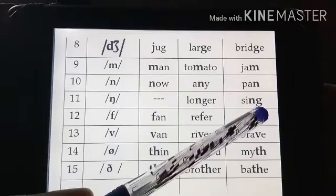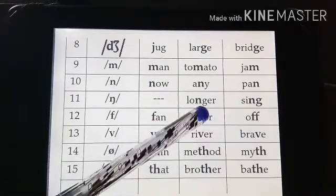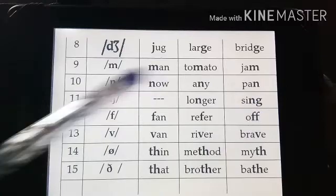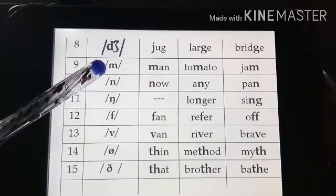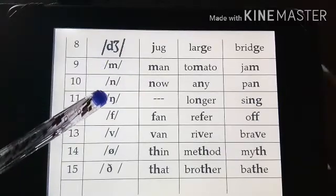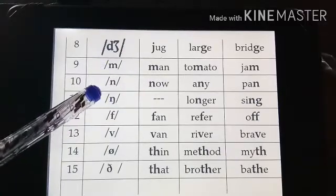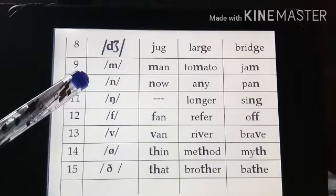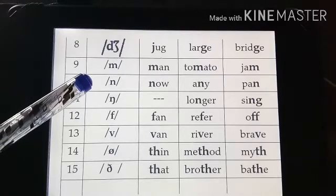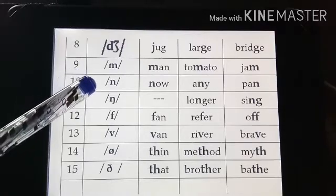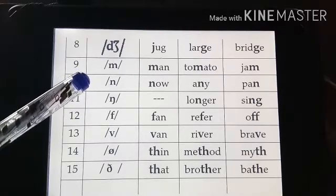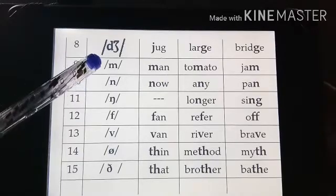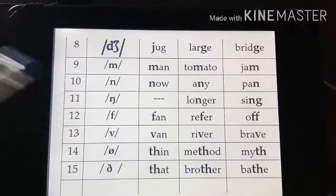In 'sing', the bold letters produce the /ŋ/ sound. /m/, /n/, and /ŋ/ — these three are called nasal sounds. Even though we close our mouth, they can be produced because the air can be released from our nostrils. That is why these three are called nasal sounds.